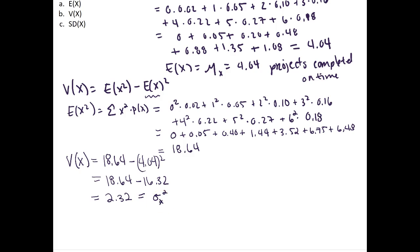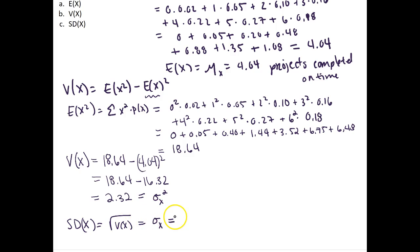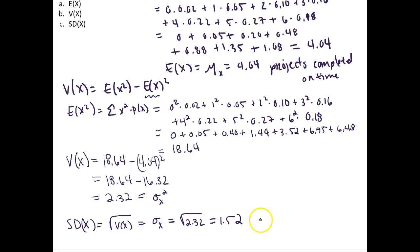If we want to find the standard deviation, or SD of x, this is simply the square root of our variance. The square root of the variance of x is equal to sigma x, which is equal to the square root of 2.32, which in this case is 1.52. This means that the number of projects completed on time deviates on average 1.52 projects.